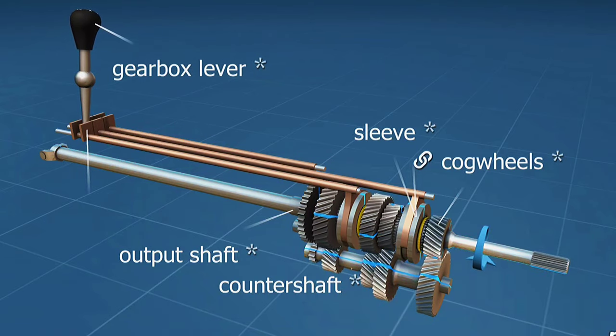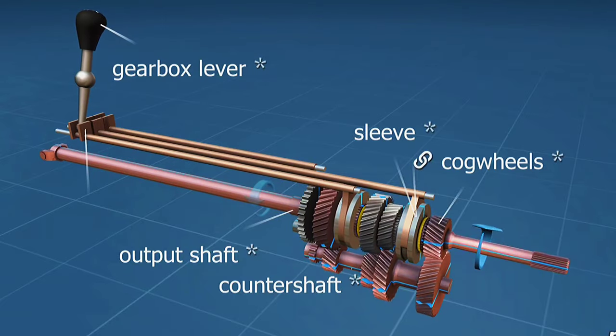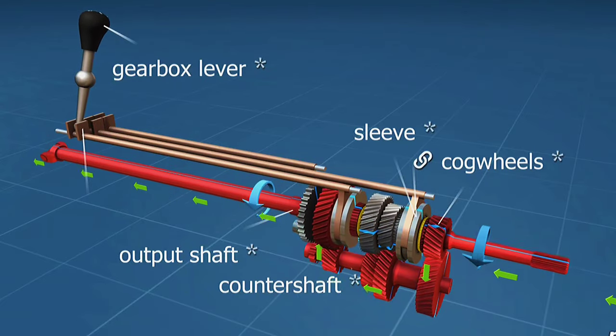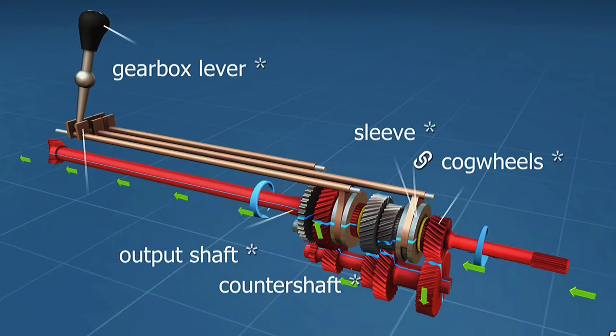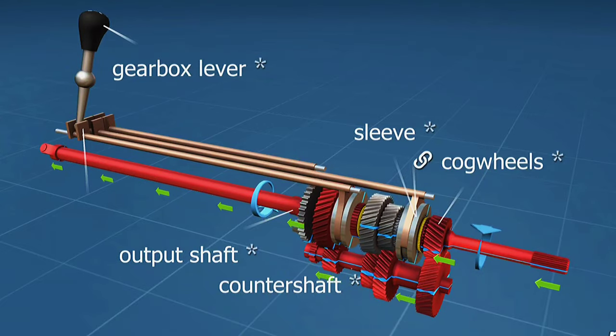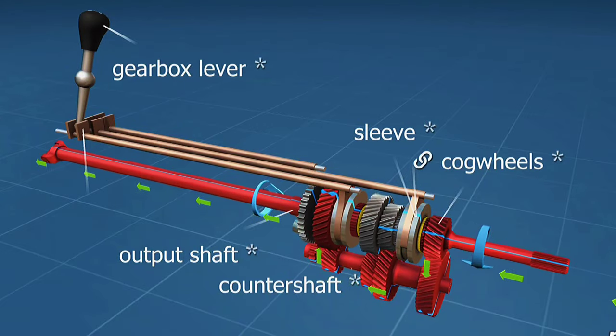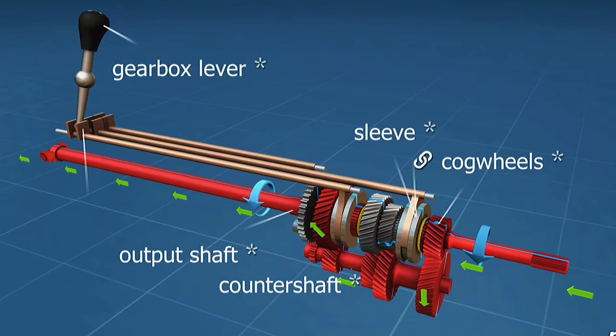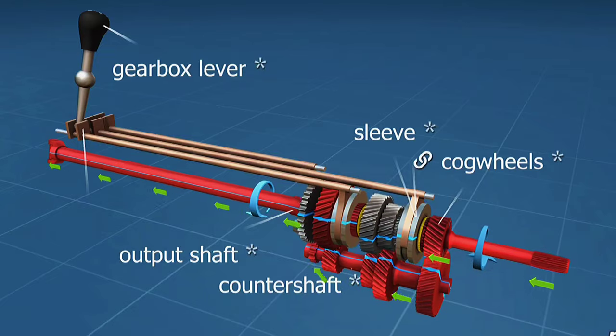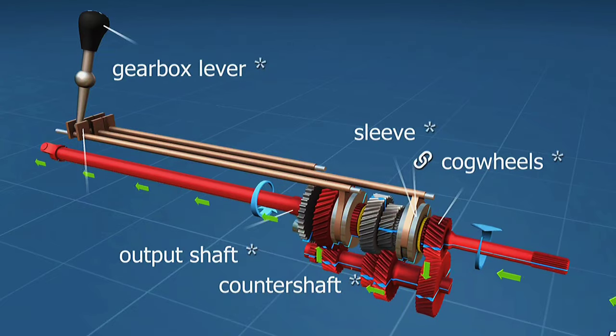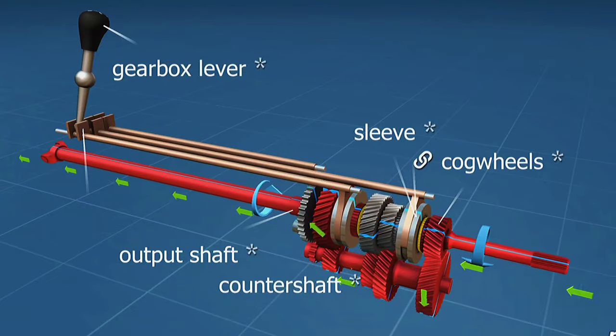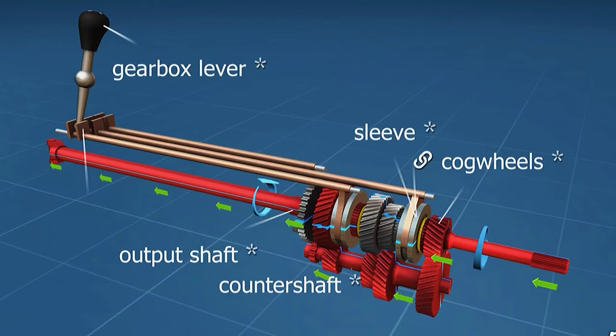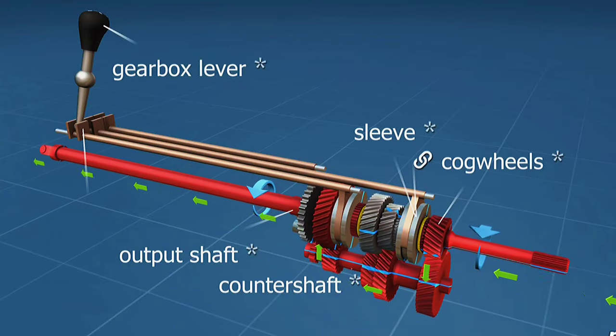To get the vehicle moving, we shift into first gear. The linkage, with the help of the sleeve attached to it, fixes the first gear on the spline shaft. The drive through the input shaft goes from the smallest gear on the lay shaft to the largest gear on the spline shaft. Since more torque is necessary to start out, first gear has the biggest gear ratio, meaning the smallest gear is in mesh with the biggest one.